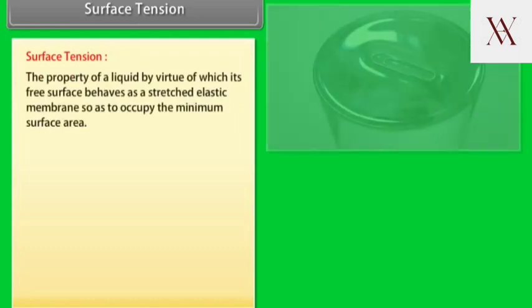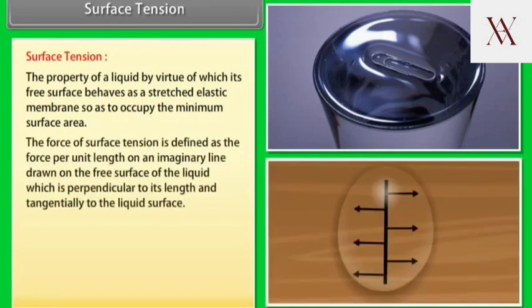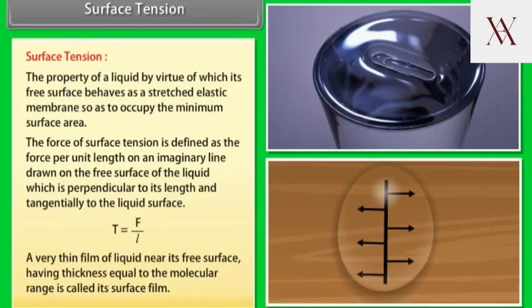Surface tension. Surface tension is the property of a liquid by virtue of which its free surface behaves as a stretched elastic membrane so as to occupy the minimum surface area. The force of surface tension is defined as the force per unit length on an imaginary line drawn on the free surface of the liquid which is perpendicular to its length and tangentially to the liquid surface. T equals F by L. A very thin film of liquid near its free surface having thickness equal to the molecular range is called its surface film.